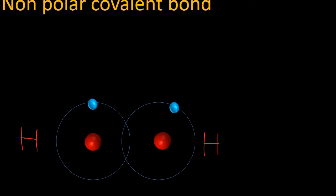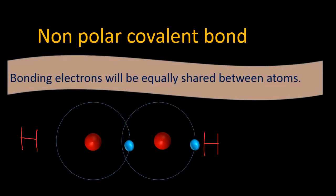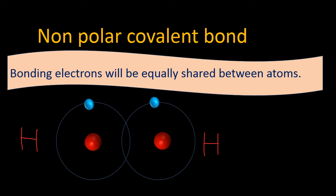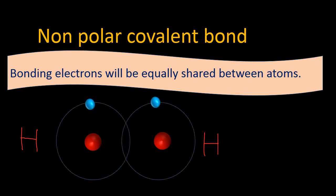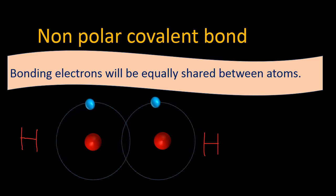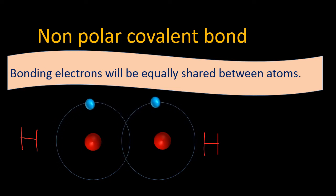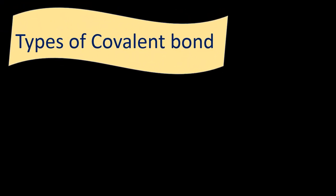Non-polar covalent bonds are bonds where bonding electrons are equally shared between atoms. Taking the example of a hydrogen molecule (H₂): hydrogen has one electron in its outermost shell and needs two to complete the duplet rule. It will attract one electron from the other hydrogen atom, not permanently but sharing it. Both hydrogen atoms share their electrons with each other and complete their duplet rule, forming a non-polar covalent bond.